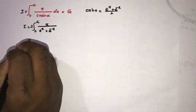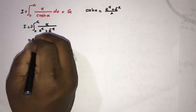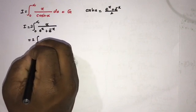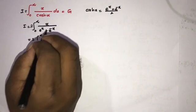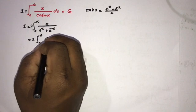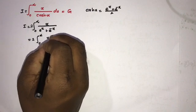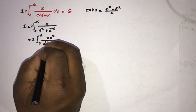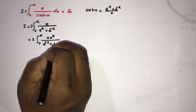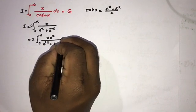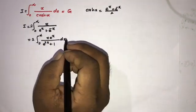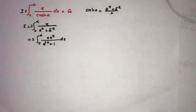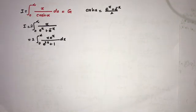Now I am going to multiply both numerator and denominator by e to the x, giving us the integral from 0 to infinity of x times e to the x over e to the 2x plus 1, dx.